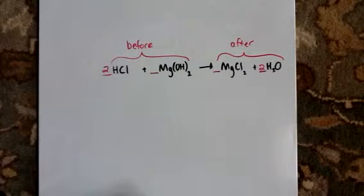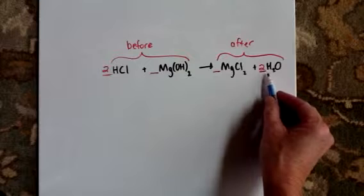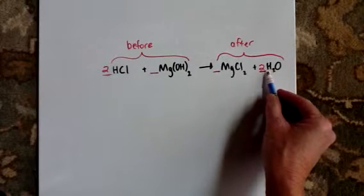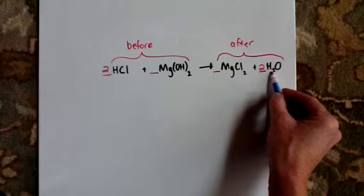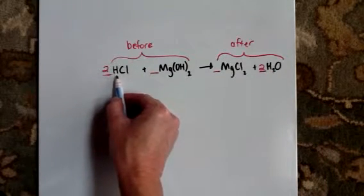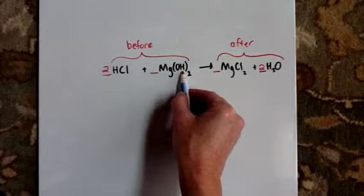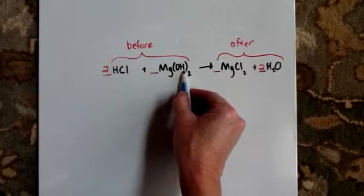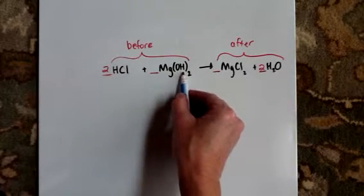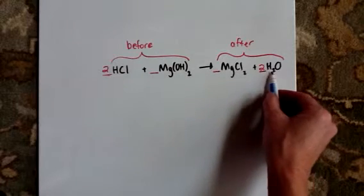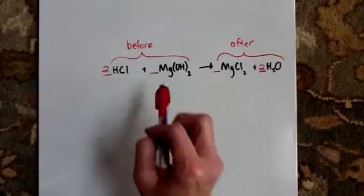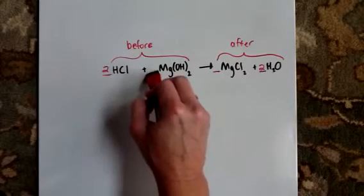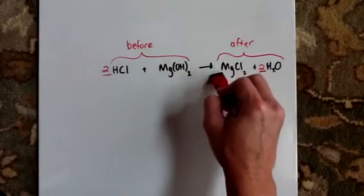Well, now we better check our hydrogen. We have a total of four hydrogen atoms here, because we say two times two. It's four hydrogens after. Before, we have two here and two there. So that's a total of four hydrogens before and four hydrogens after. So hydrogen just balanced out by itself without us having to do anything. These other coefficients ended up being one.